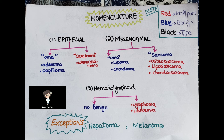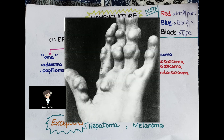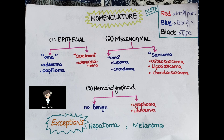For mesenchymal tumors, benign forms also use the suffix '-oma.' For example, a fatty tissue benign tumor is a lipoma, and a cartilage-forming mesenchymal tumor is a chondroma. For malignant mesenchymal tumors, the suffix is '-sarcoma.' A bone-forming malignant tumor is an osteosarcoma, malignant fatty tissue is a liposarcoma, and malignant cartilage-forming tumor is a chondrosarcoma.